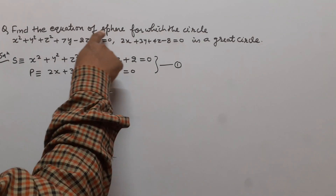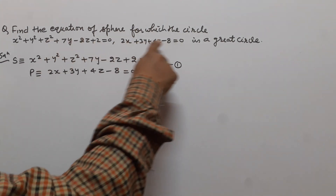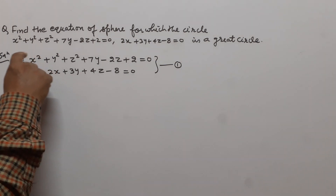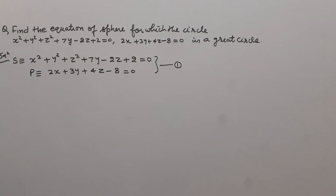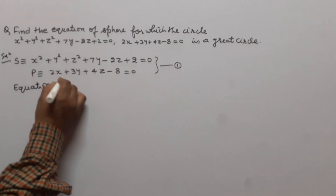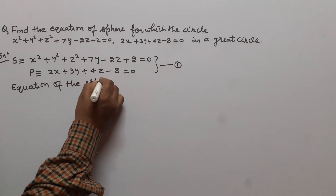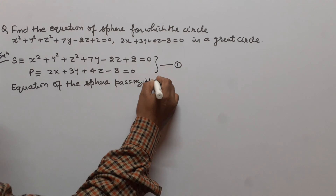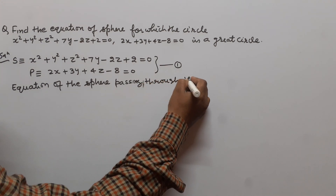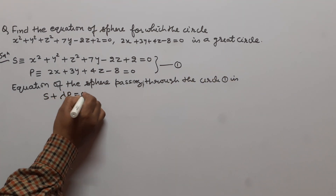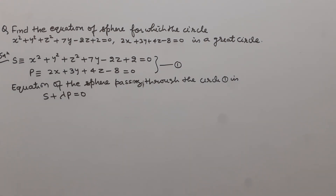We have to find the equation of the sphere for which this circle is a great circle. The equation of the sphere passing through the given circle 1 is S + λP = 0.